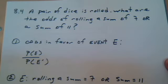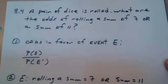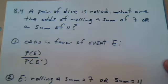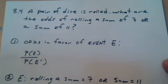A pair of dice is rolled, what are the odds of rolling a sum of 7 or a sum of 11? There are two dice that are being rolled, and if you roll a pair of dice, there are 36 ways those two dice can fall.